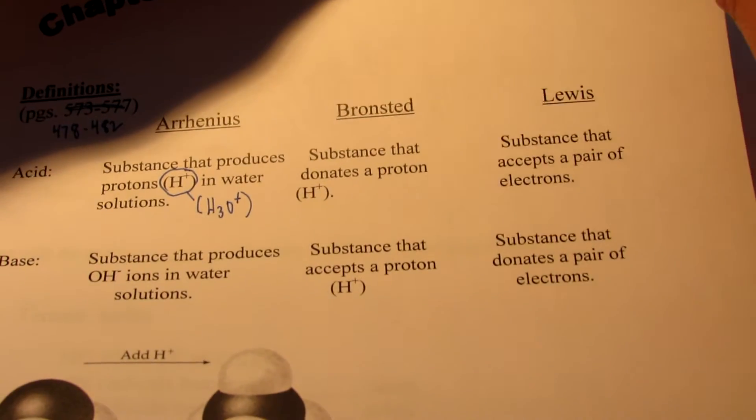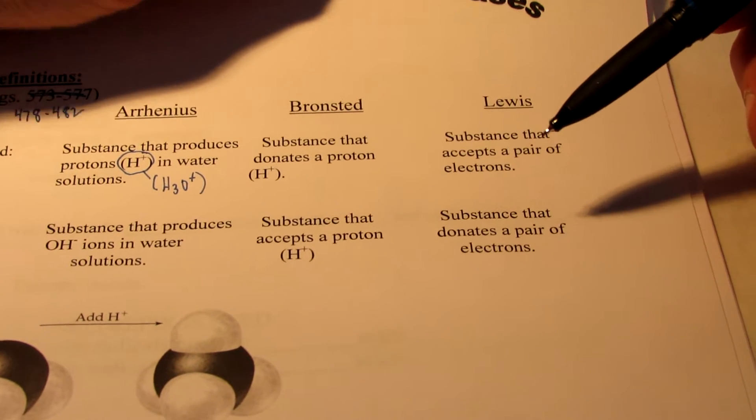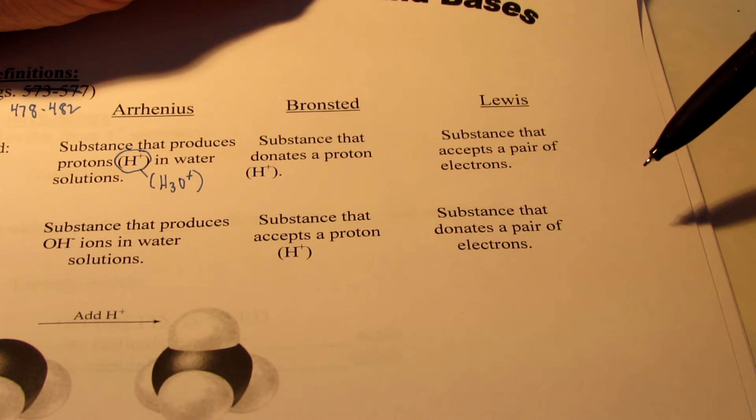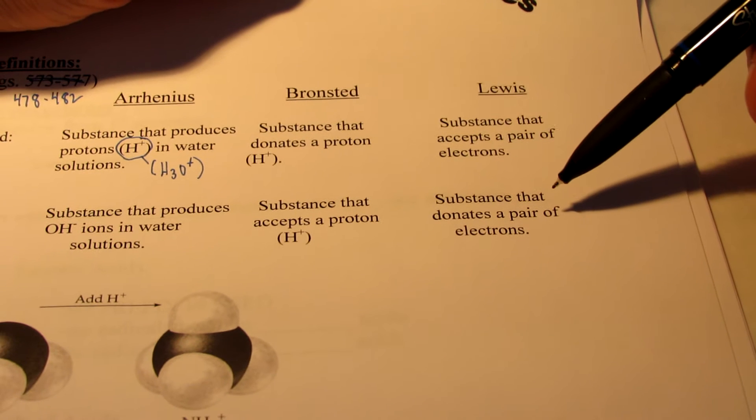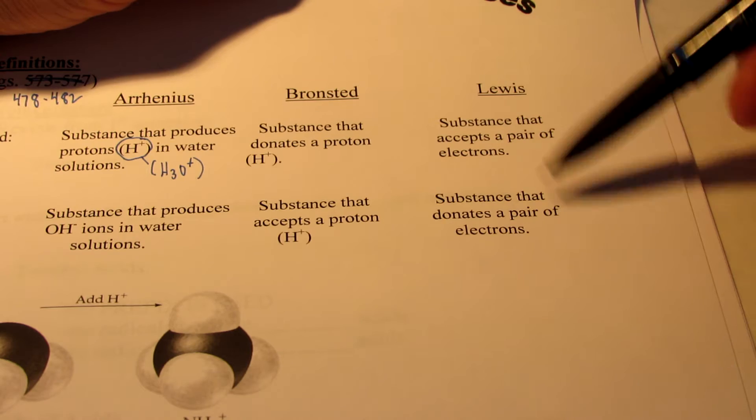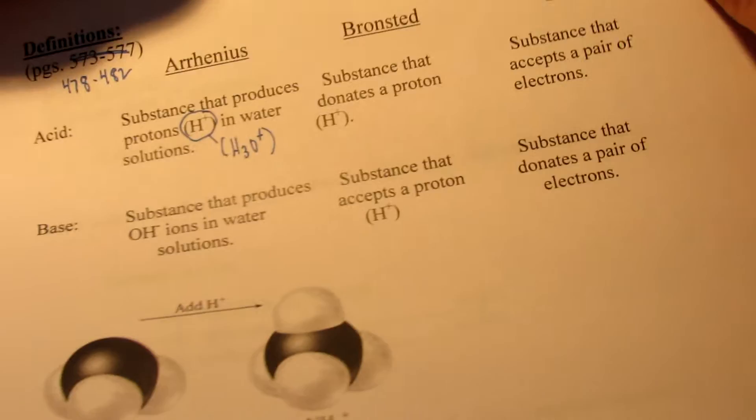The last definition we don't discuss too much in this class. It's the Lewis definition. A substance that accepts a pair of electrons during a chemical reaction is considered to be a Lewis acid, and a substance that donates or gives up a pair of electrons during a chemical reaction is a Lewis base. Don't worry too much about this definition for right now.